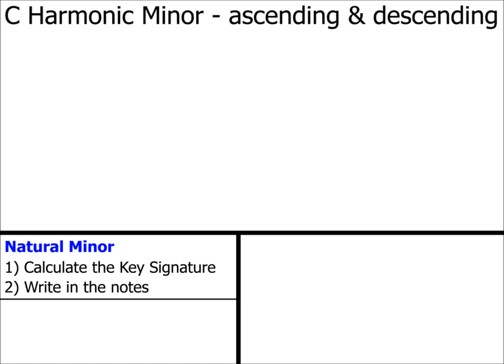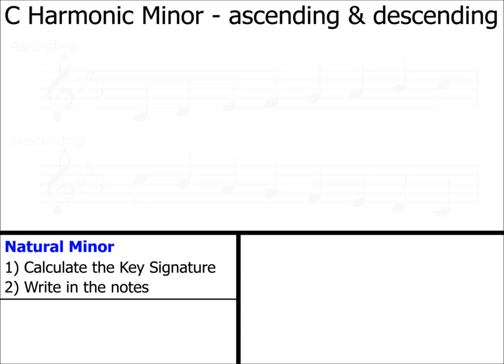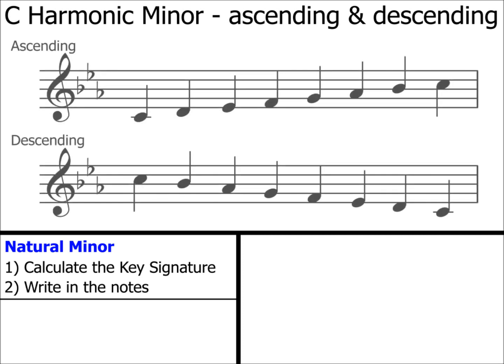Let's assume we wanted to calculate C harmonic minor ascending and descending. Here's the C natural minor scale we calculated in part one. That's steps one and two completed. To turn this natural minor into a harmonic minor, we need to add a new step.